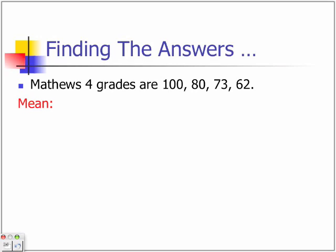Let's find the mean. So you add 100 plus 80 plus 73 plus 62. And that equals 315.